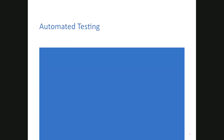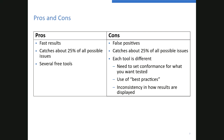Automated testing — there are pros and cons. Pros: it's fast, you're going to get results really quickly, and there are several free tools out there. One of the catches is it only catches about 25% of all issues. Some cons: you will get false positives, each tool is different, you need to set what conformance level you want to use, some use best practices instead of actual spec language, and there can be inconsistency in how results are displayed.